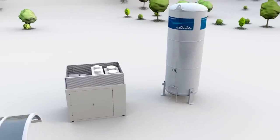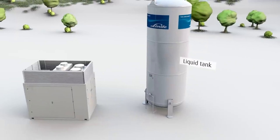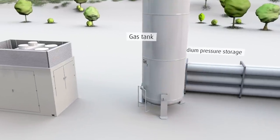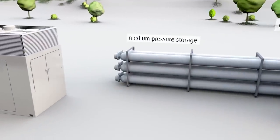Let's start with the hydrogen supply. For the on-site storage of hydrogen there are several possibilities. In the example you see a liquid tank, gas tank or medium pressure storage unit.